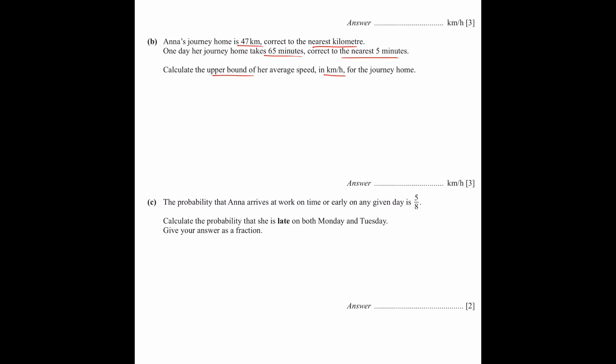Now there is one thing that I always suggest to my students. We have realized that this is an upper bound lower bound related question. Let's see what values are given. We are given distance which is 47 km, and this is rounded correct to the nearest km, which means 1 km. For upper bound or lower bound, we will divide it by 2.